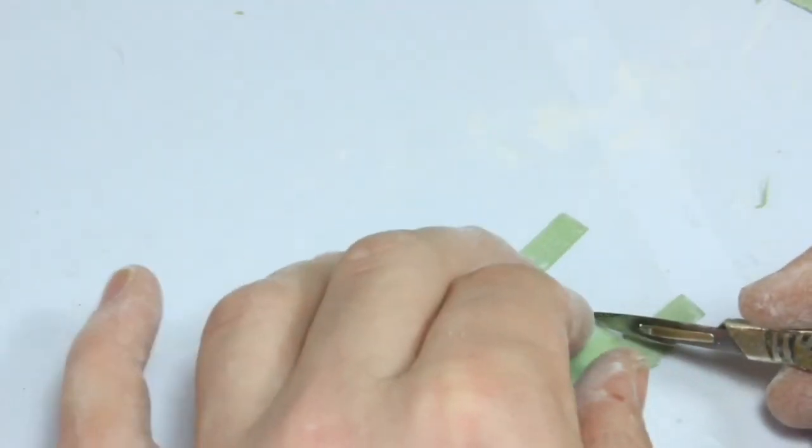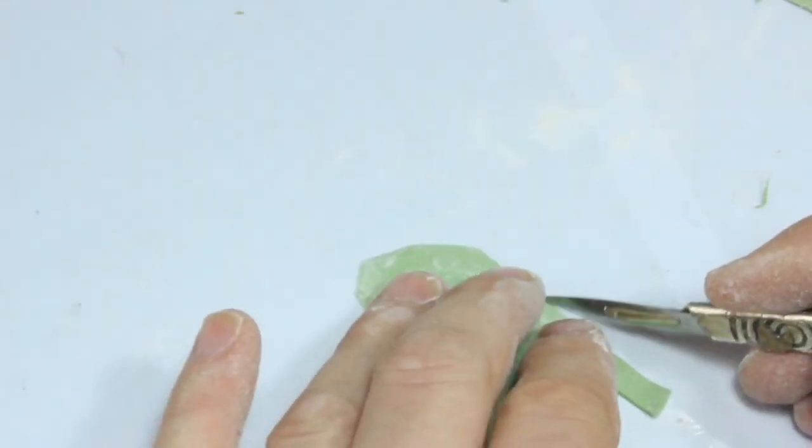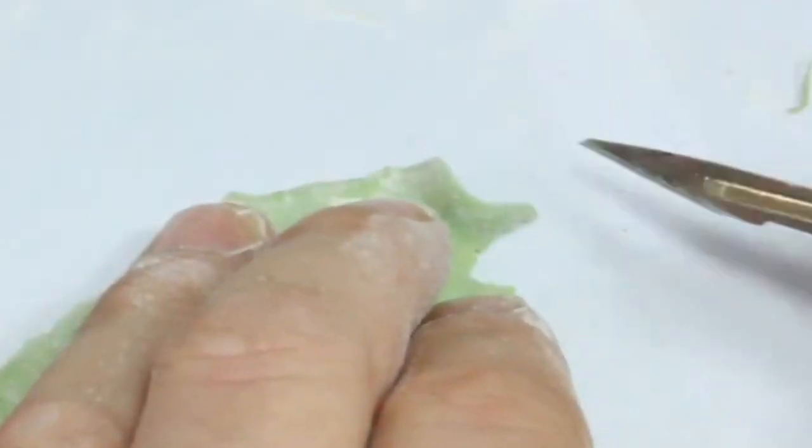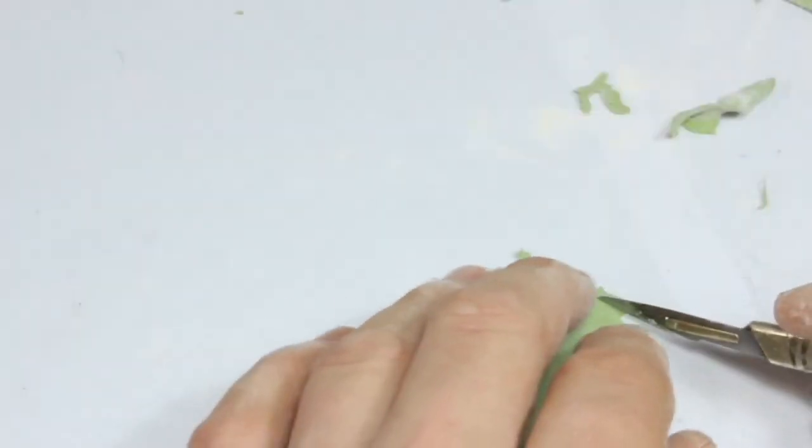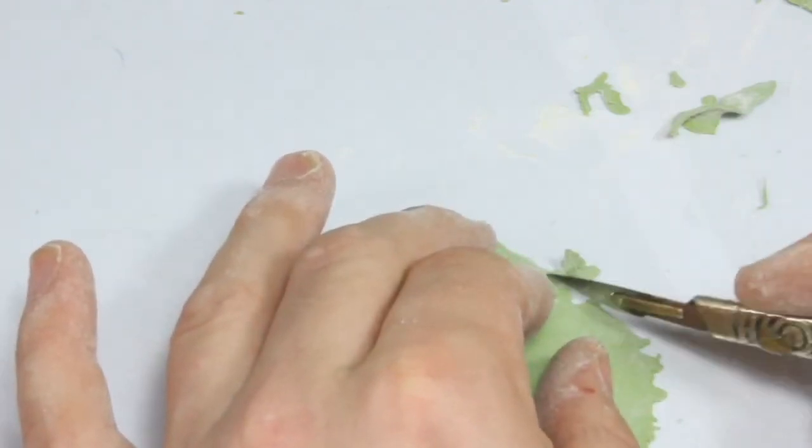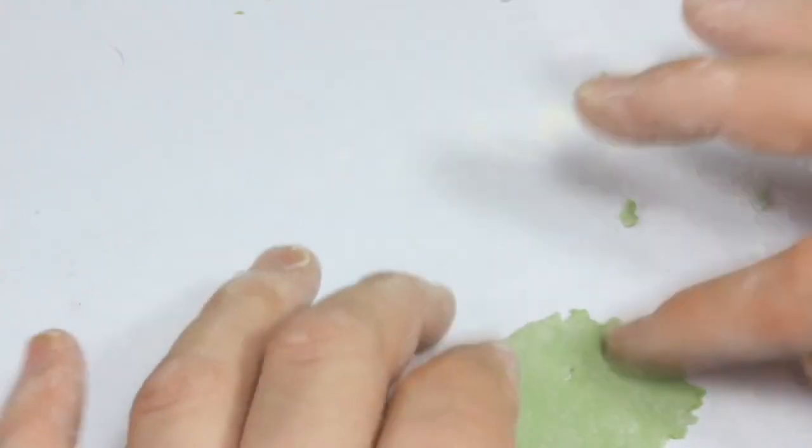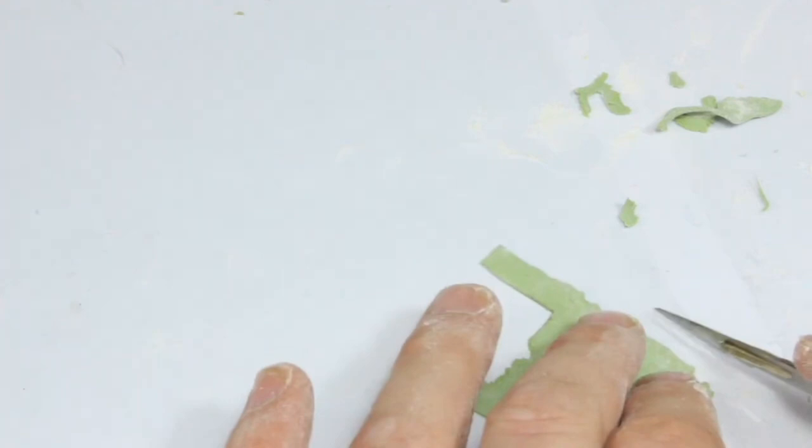I now begin to use the scalpel to tear the edges of the banner. You can make it as torn as you like. This one is pretty old so we'll have lots of torn edges. I've also picked a hole in the center. Trim the edges.